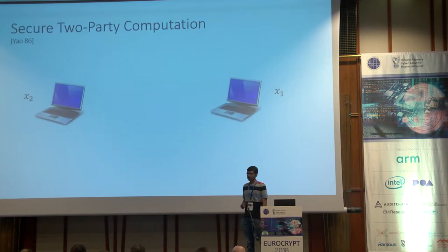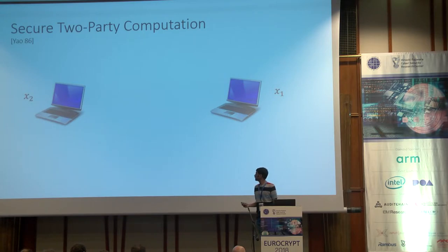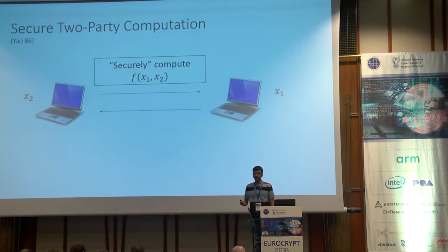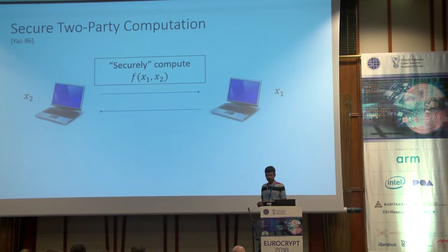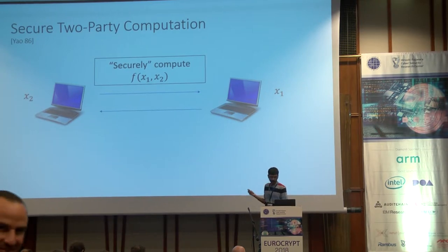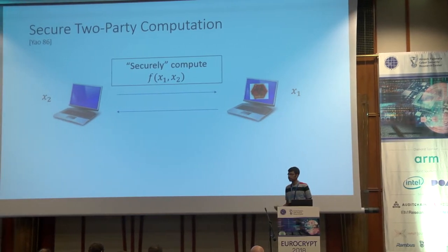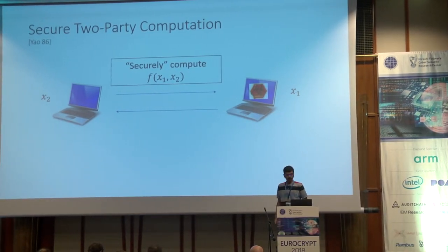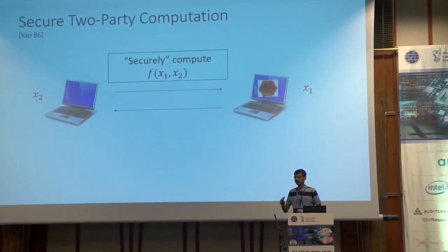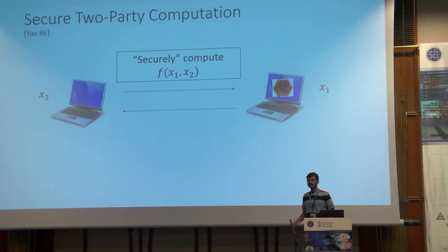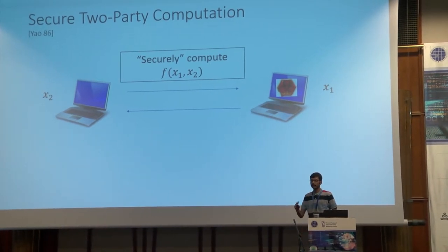Let me start by describing the setting of two-party computation. In this setting, there are two parties with private inputs x1 and x2 respectively, and they wish to compute a joint function on their private inputs. The security notion we want to guarantee is that even if one of the parties gets corrupted, it does not learn anything about the other party's input apart from what is leaked by this function.